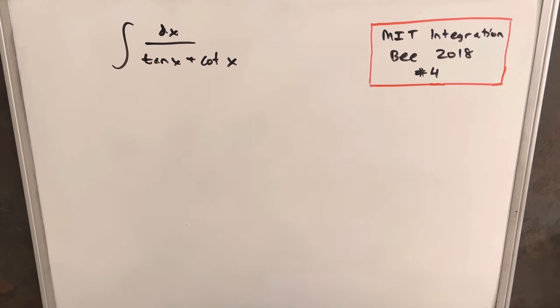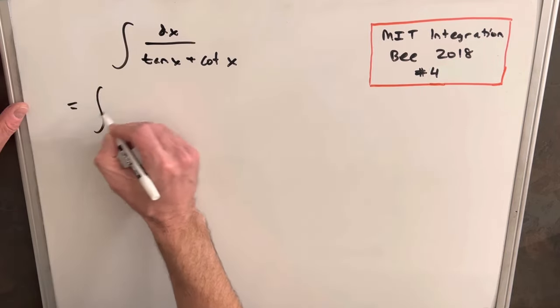Okay, to get started, what I want to do, I'm just going to, a lot of times it's more helpful to write this in terms of sine and cosine, so let's just rewrite this as,